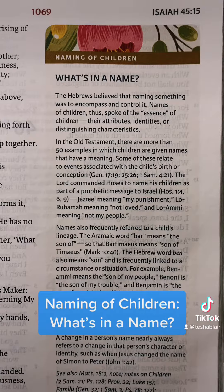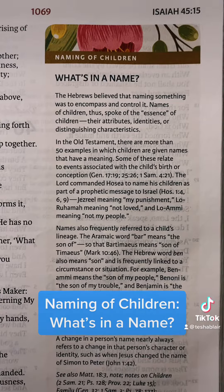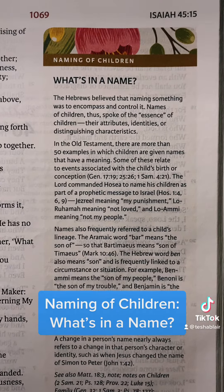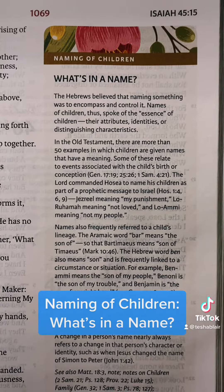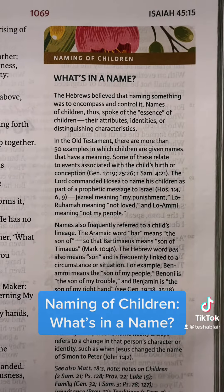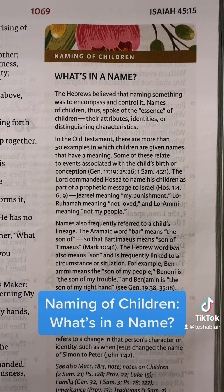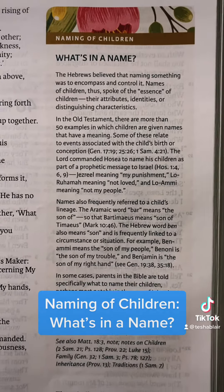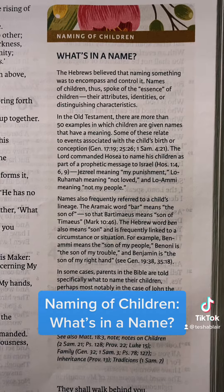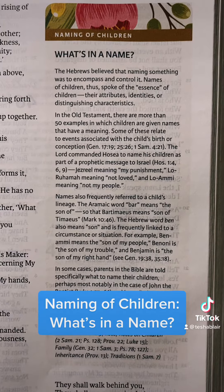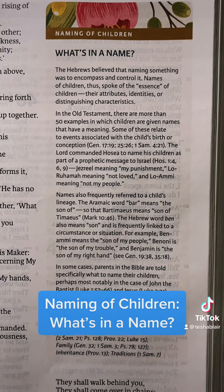In the Old Testament, there are more than 50 examples in which children are given names that have a meaning. Some of these relate to events associated with a child's birth or conception. The Lord commanded Hosea to name his children as part of a prophetic message to Israel: Jezreel meaning 'my punishment,' Lo-Ruhamah meaning 'not loved,' and Lo-Ammi meaning 'not my people.'